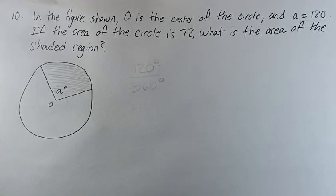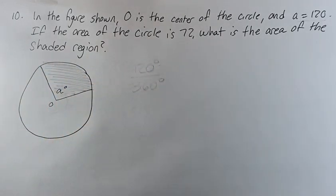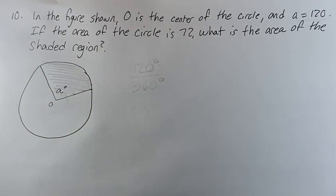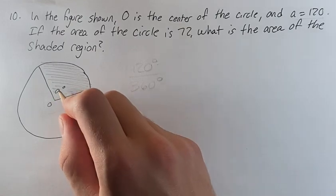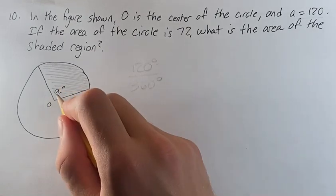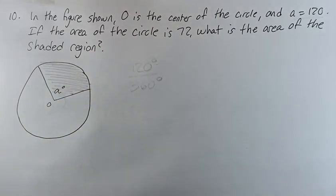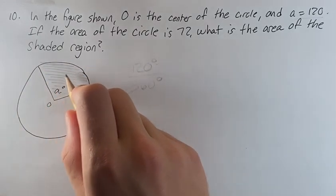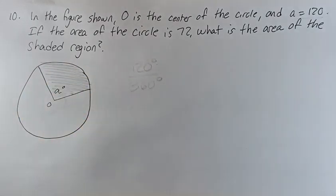Hello and welcome back to another video. Today we have circle O. We're trying to calculate the area of this shaded region. What we can note is that whatever percentage A degrees takes up of the full 360 degrees of this circle is the same percentage that the area of this region takes up of the full area of the circle.